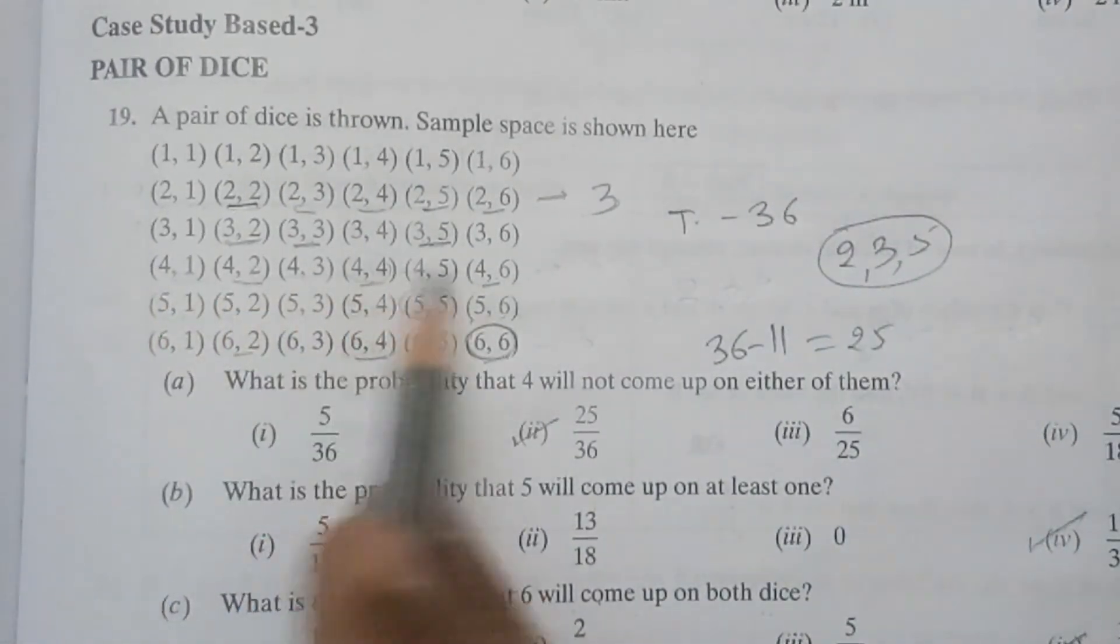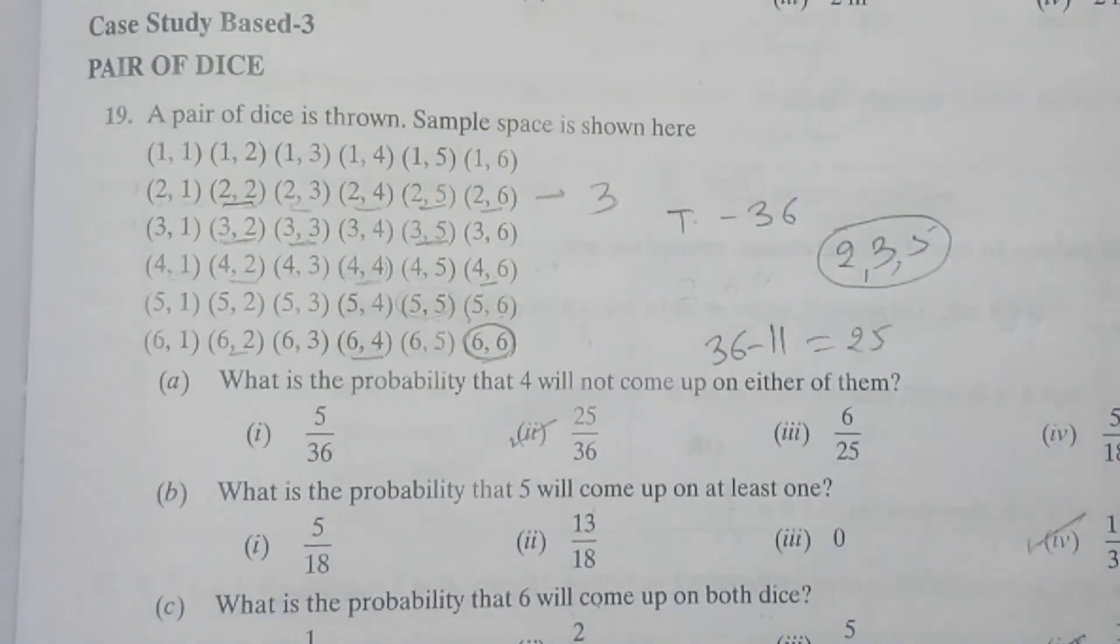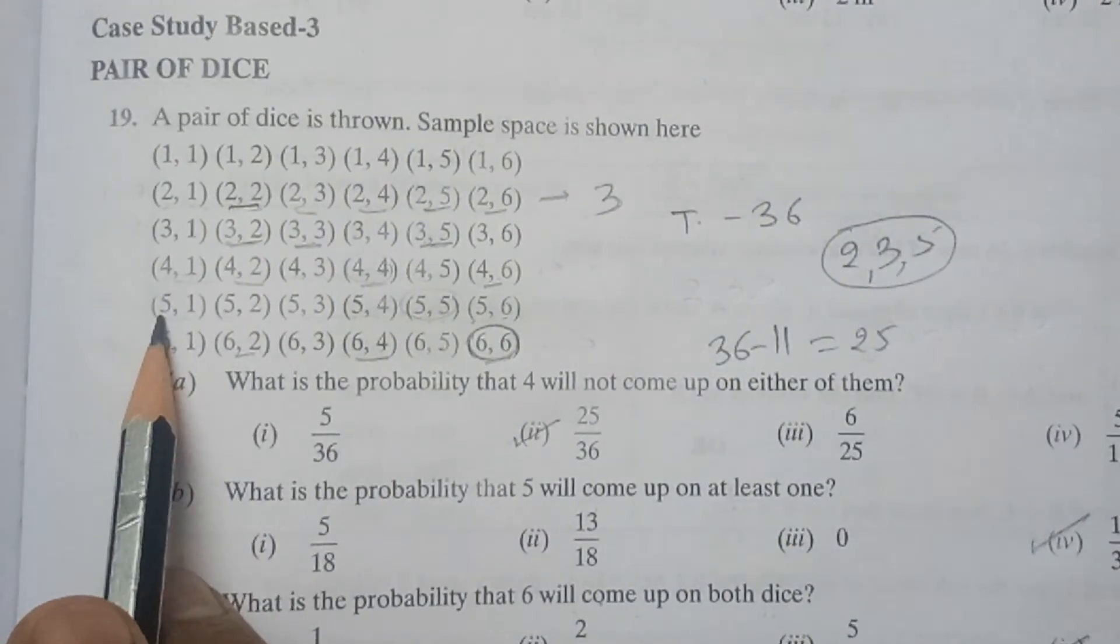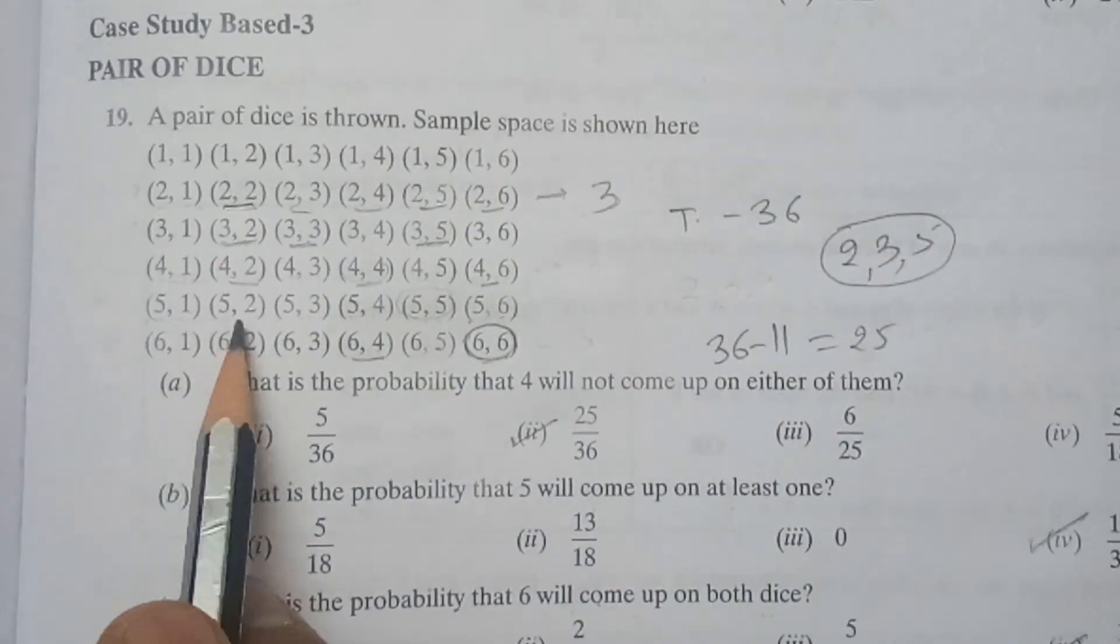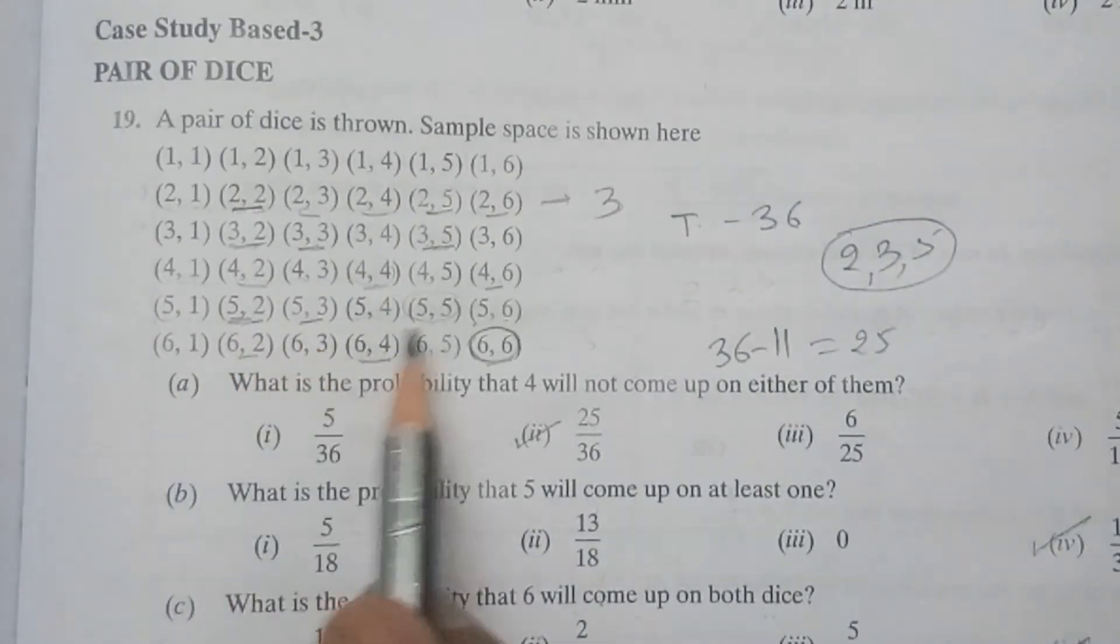In this row no prime number will come because 4 is already a composite number. Here in the 5 row, prime numbers will come: (5,2), (5,3), and (5,5).